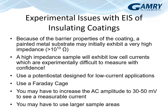Even with a good low-current potentiostat like the Reference 600+ and a Faraday cage, current signals may be too small — you may run up against the capacitive limit or current measurement limitations. One option is to increase the AC amplitude: normally 10 mV is the practical limit for electrochemistry to maintain a linear signal, and 15 mV is probably the maximum worth attempting. Coatings are a special case — with an intact barrier coating there is no electrochemistry happening, so a higher AC amplitude gives more current signal without inducing nonlinear harmonics.